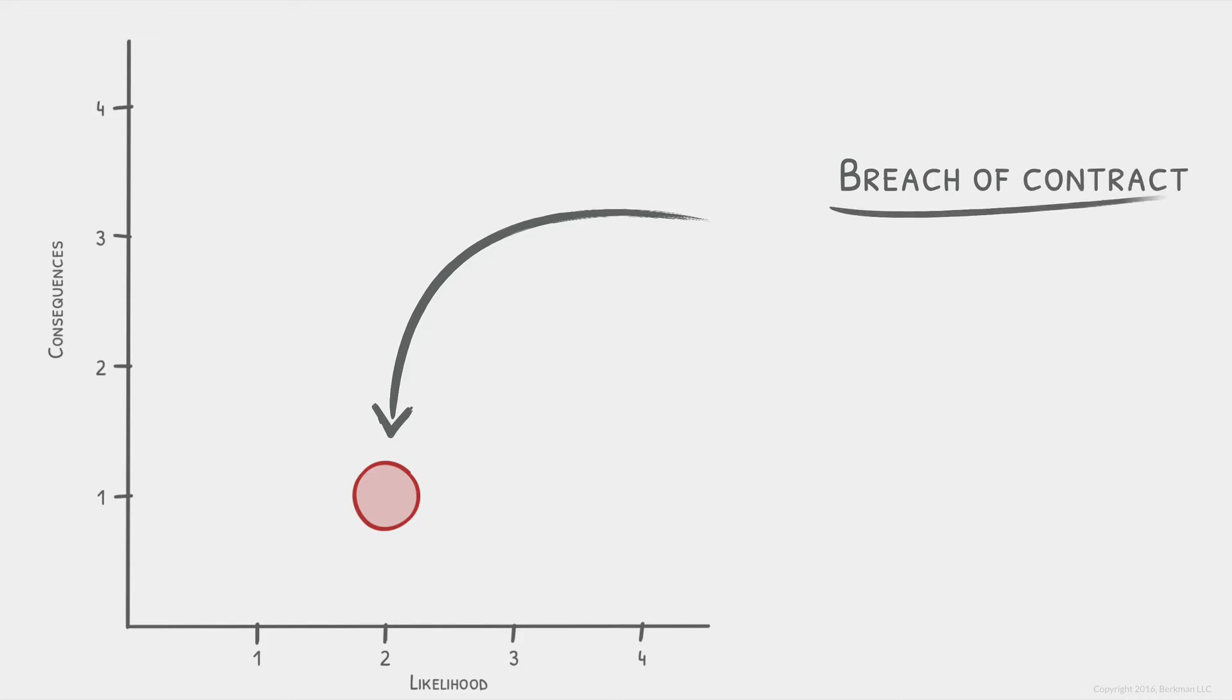Imagine that there is a potential breach of contract risk. After some risk analysis, covered in the process section, we conclude that it is less likely than not and rate the likelihood a 2. Based on the size of the contract and the liquidated damages clause, we rate the consequences 1 as insignificant or immaterial.